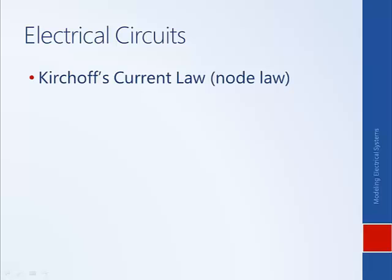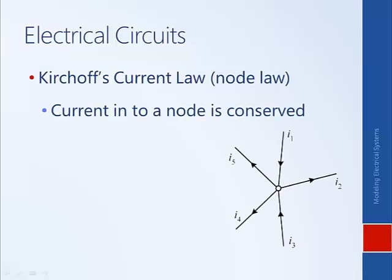We will now introduce some laws for deriving the differential equations for electrical circuits from first principles. Much in the same way that we applied Newton's laws to mechanical systems, here we will apply Kirchhoff's laws. The first is called Kirchhoff's current law, or the node law: current into a node is conserved — the node does not accumulate charge, so whatever current flows in must exactly equal the current flowing out. Mathematically, I1 plus I3 equals I2 plus I4 plus I5.